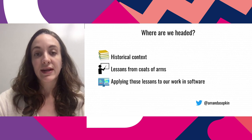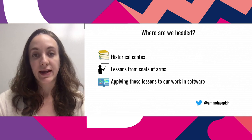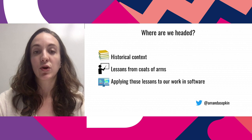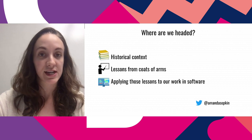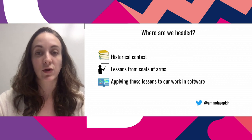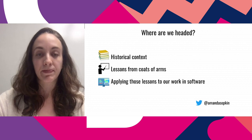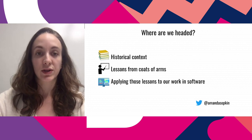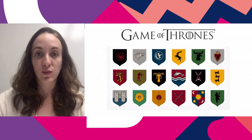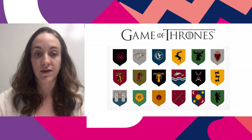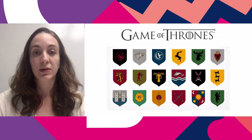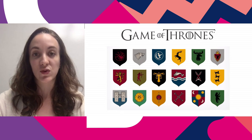To give you an idea of where we're headed, I'll open by giving you some historical context about coats of arms — what they're for and where they come from. For the meat of this talk, we'll look at the lessons we can learn from the design of coats of arms. And then we'll talk about how to apply those lessons to our work in software.